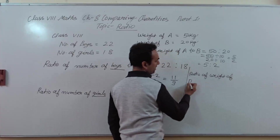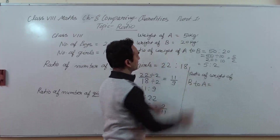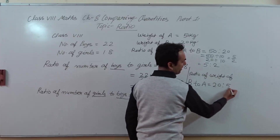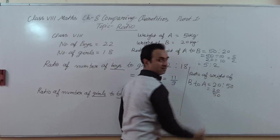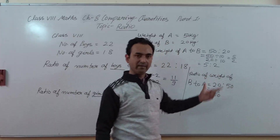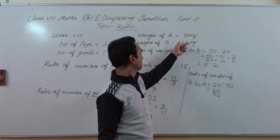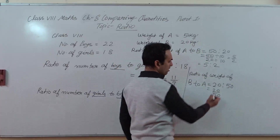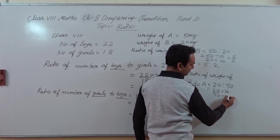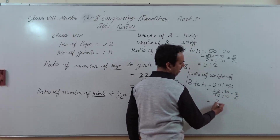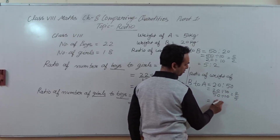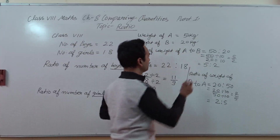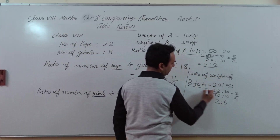So 5 ratio 2 is the answer — the ratio of weight of A to B is 5 ratio 2. Now we are finding the ratio of weight of B to A. Weight of B is 20, ratio, weight of A is 50. So 20 upon 50 — you write B first, then A. Simplify by dividing by 10, you get 2 upon 5, written as 2 ratio 5.